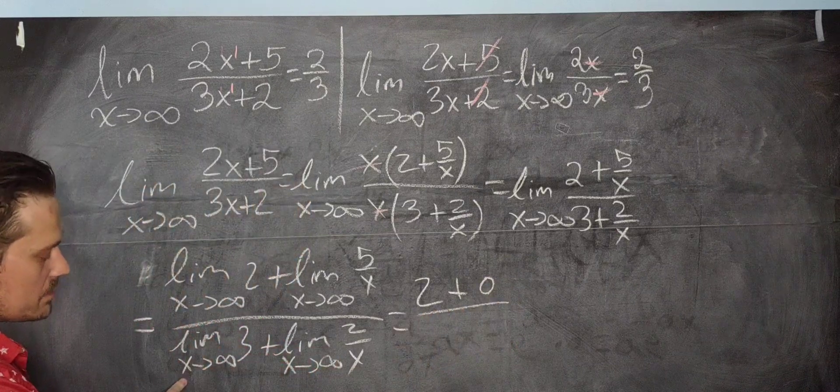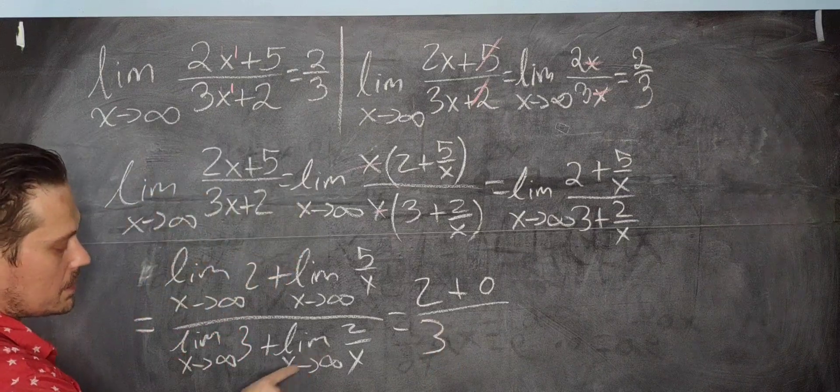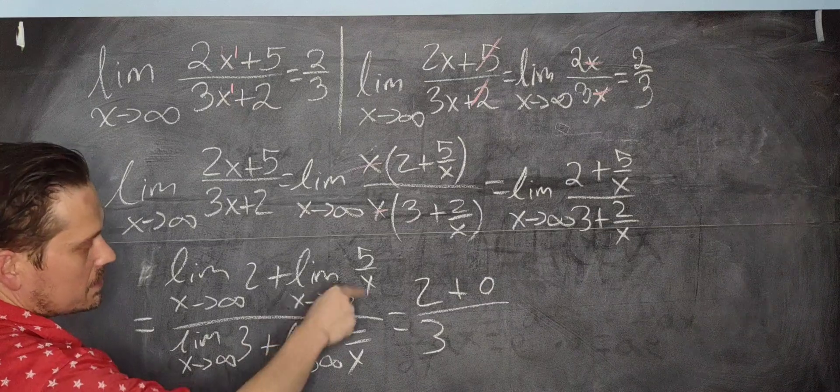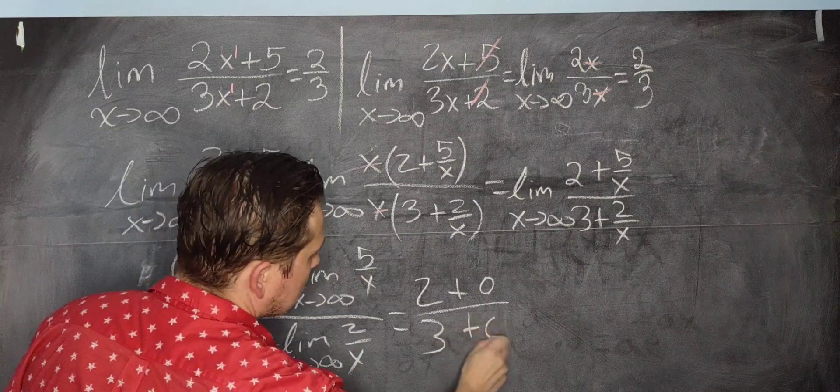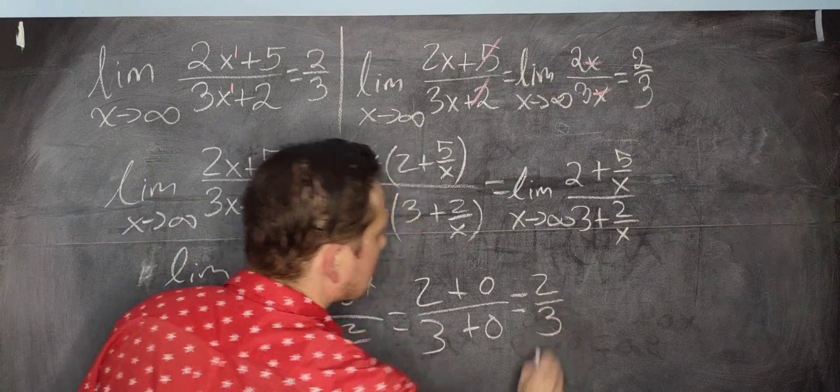The limit as x approaches positive infinity of 3, it's a constant, never changes, it's 3. And this limit as x goes to positive infinity of 2 over x is again equal to 0 for the same reason as this one. So you have 0 here. And lastly, notice at the very end, you once again end up with 2 thirds.